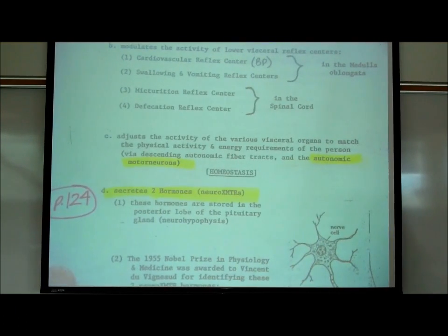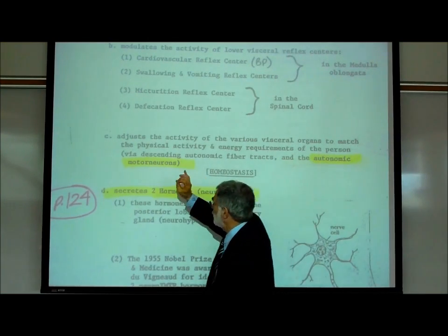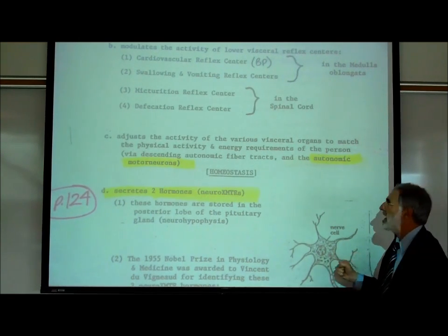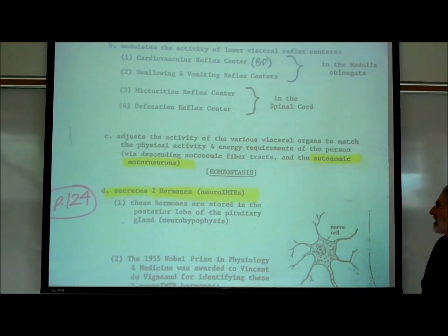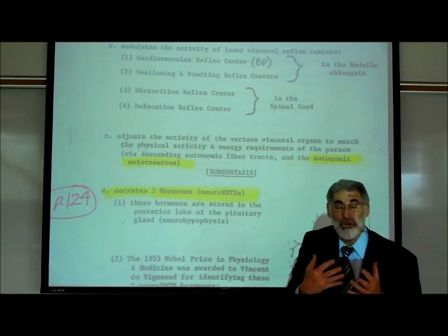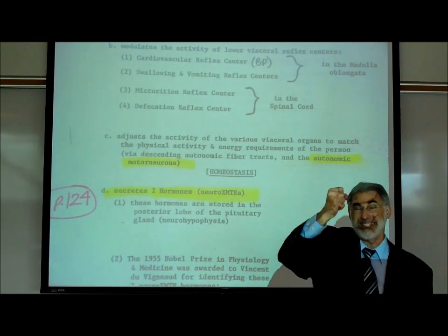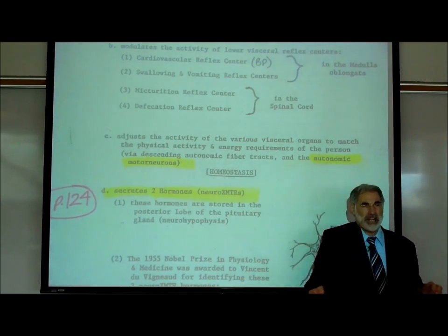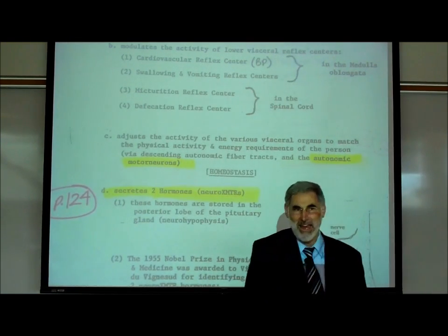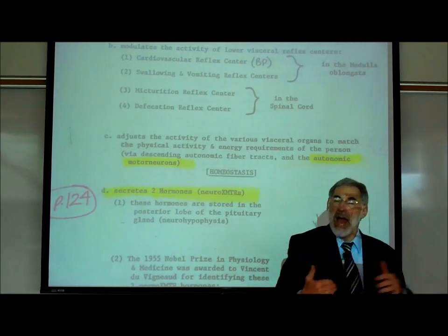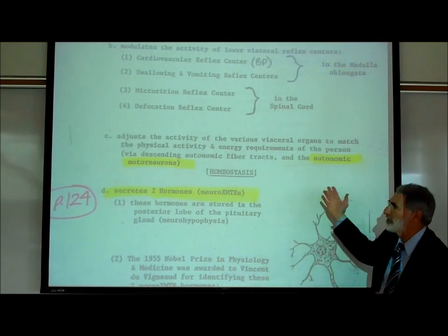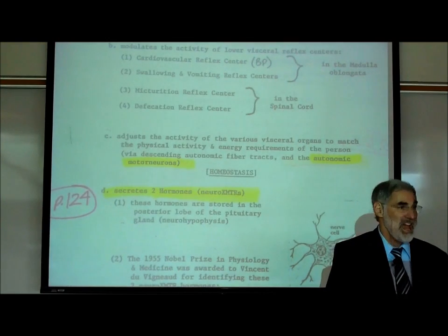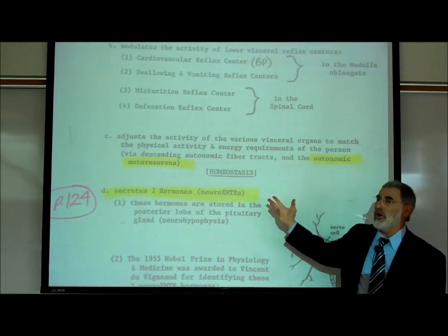In addition, our hypothalamus adjusts the activity of our various visceral organs to match the physical activity and energy requirements of the person. This is what we covered when we said the hypothalamus is the highest control center over the autonomic motor neurons. The function of our autonomic motor neurons — parasympathetic and sympathetic — is to power up or power down the internal organs of our body to meet our energy demands. This is the essence of homeostasis.